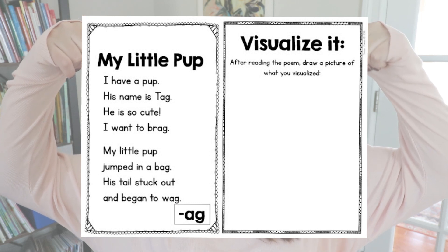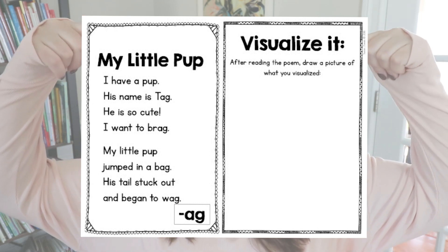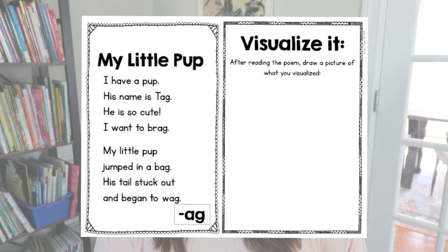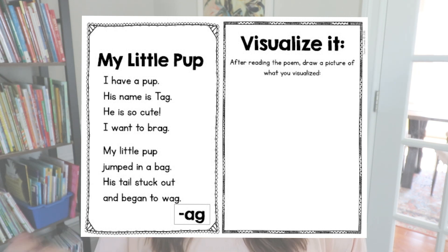If you have my phonics poetry unit, for each poem I have a visualize-it sheet. On one side students will read the poem the same way you would without the sheet — read it together a few times, highlight the phonics pattern — but then students read it one more time by themselves and draw a picture of what they see. No matter how you have your students visualize, it's fun to have them compare their visualizations afterwards. It's fun to say, 'Oh I didn't picture that guy there, I pictured him over here' — just the little discrepancies that they have.